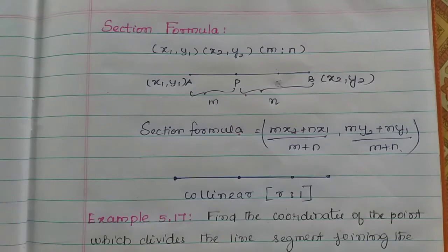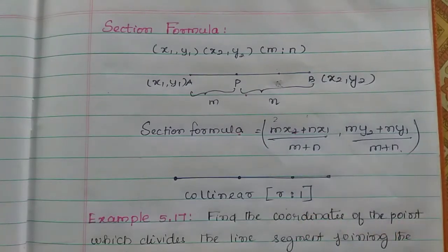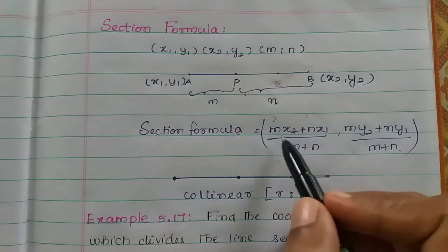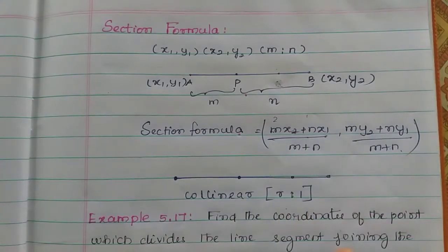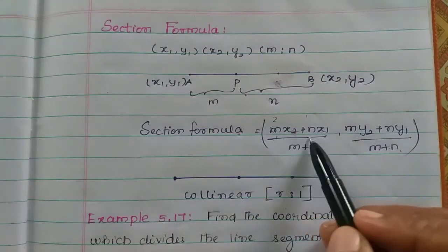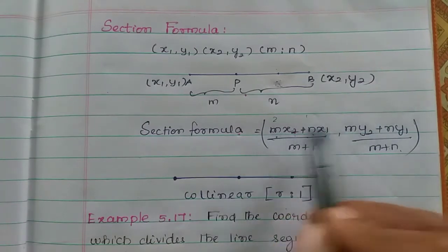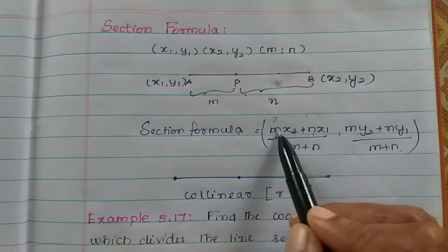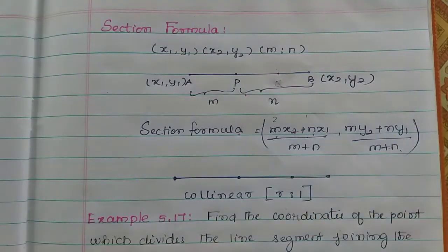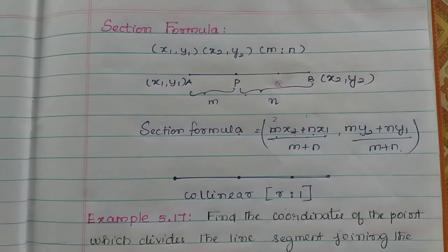Let's see the section formula — there is a tri-section with ratio 2 to 1. The section formula is: mx2 plus nx1 divided by m plus n. For tri-section, the parts are equal to 3. That is the total ratio — that is the total number of parts.